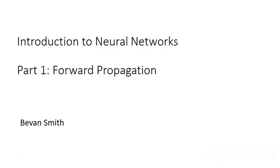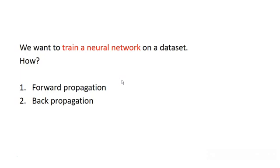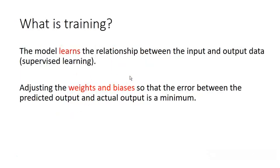Welcome, my fellow machine learners. I'm Bevan Smith and in the next series of videos we're going to be looking at neural networks. Specifically in this video we're going to be looking at forward propagation. To train a neural network on a dataset we need to carry out two big operations: the first is called forward propagation and the second is back propagation.